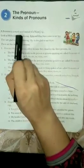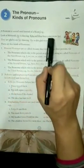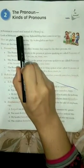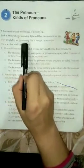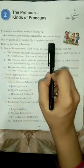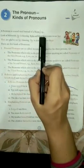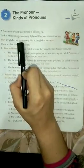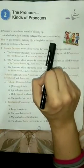Now look at the picture on page number 11. Mevish is dancing. Rida and Hina have come to see her. They have used 'she' as a pronoun in place of Mevish. They are glad to see her dancing. She is also glad to see them. 'They' is used in place of Rida and Hina to avoid repetition. 'Her' is the objective case of 'she', and 'them' is the objective case of 'they'.